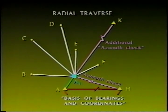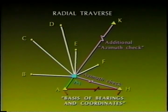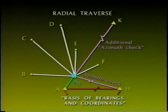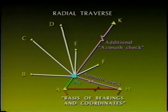The radial survey method of locating points is also referred to as side shooting, and is used frequently in performing topographic surveys. Any boundary ties made in this manner must be checked against the record data and their relationship to other located or calculated points.